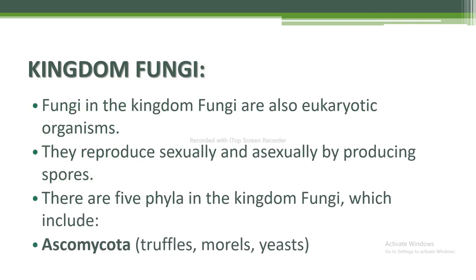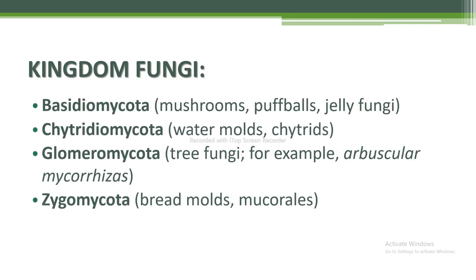Next is kingdom Fungi. Fungi are eukaryotic organisms that reproduce sexually and asexually by formation of spores. There are five phyla: Ascomycota (truffles, morels, yeasts); Basidiomycota (mushrooms, puffballs, jelly fungi); Chytridiomycota (water molds, chytrites); Glomeromycota (tree fungi, for example arbuscular mycorrhizas); and Zygomycota (bread molds and mycorrhizas).